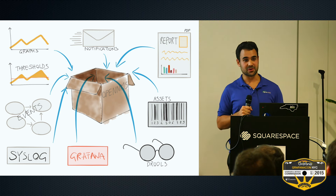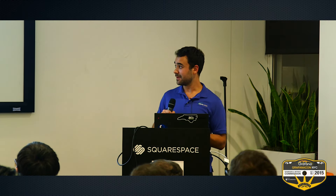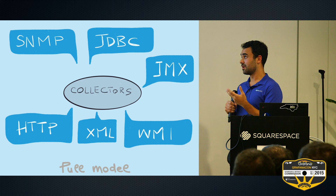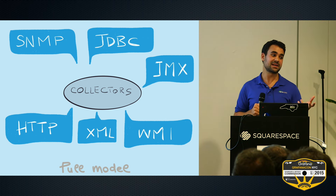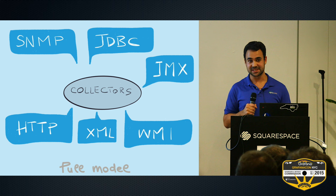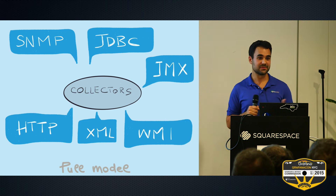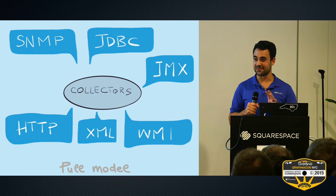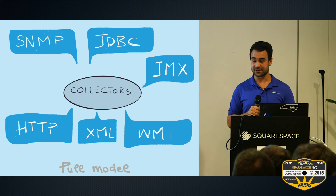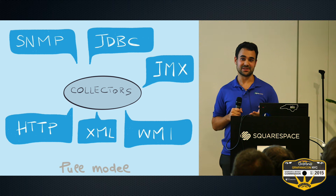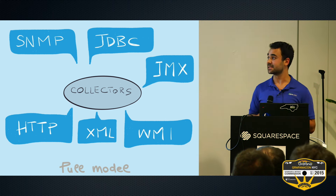Today we're going to focus more on the data collection aspect. OpenNMS works in pull mode — you configure it with your devices, how to communicate with them, how to parse the data, and it speaks to devices over various protocols, collects the data, and stores it in one of its available time series databases. Historically OpenNMS used RRD tool for storing data — static files on disk. More recently, OpenNMS supports a new time series database called Newts, which is based on Cassandra. We now support both.